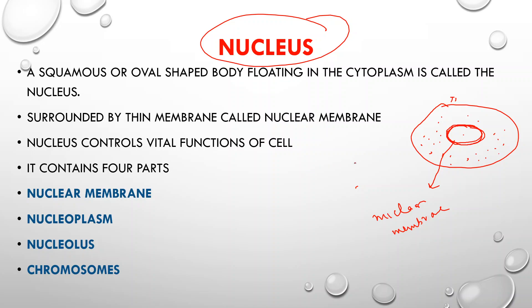In animal cells, the nucleus is present in the center of the cell. The nucleus controls vital functions of the cell. The nucleus contains four parts: nuclear membrane, nucleoplasm, nucleolus, and chromosome.